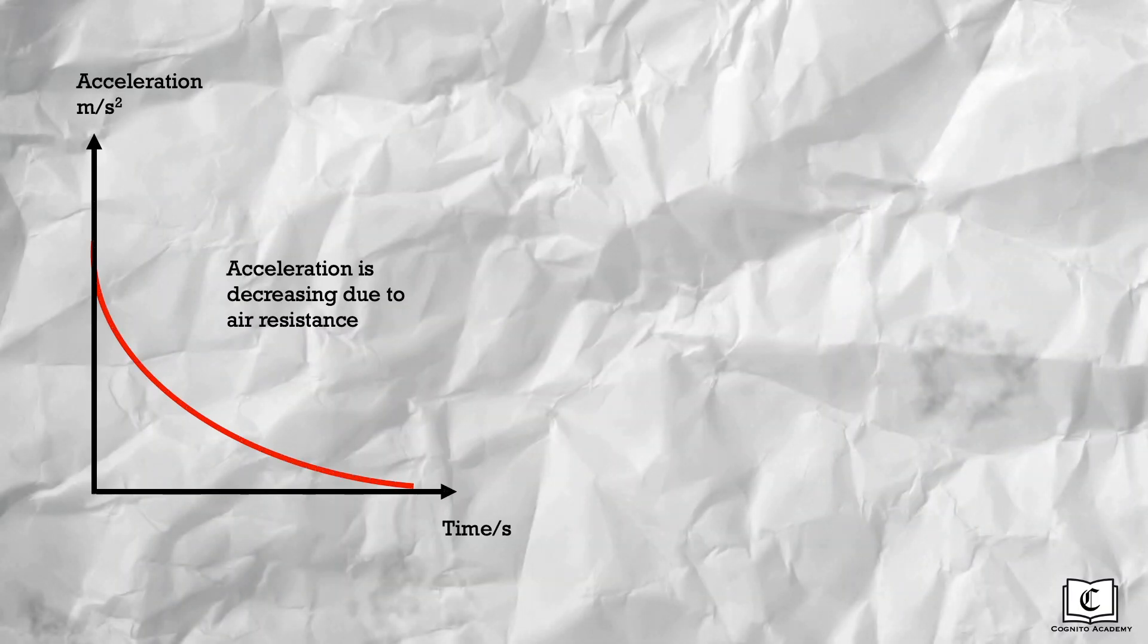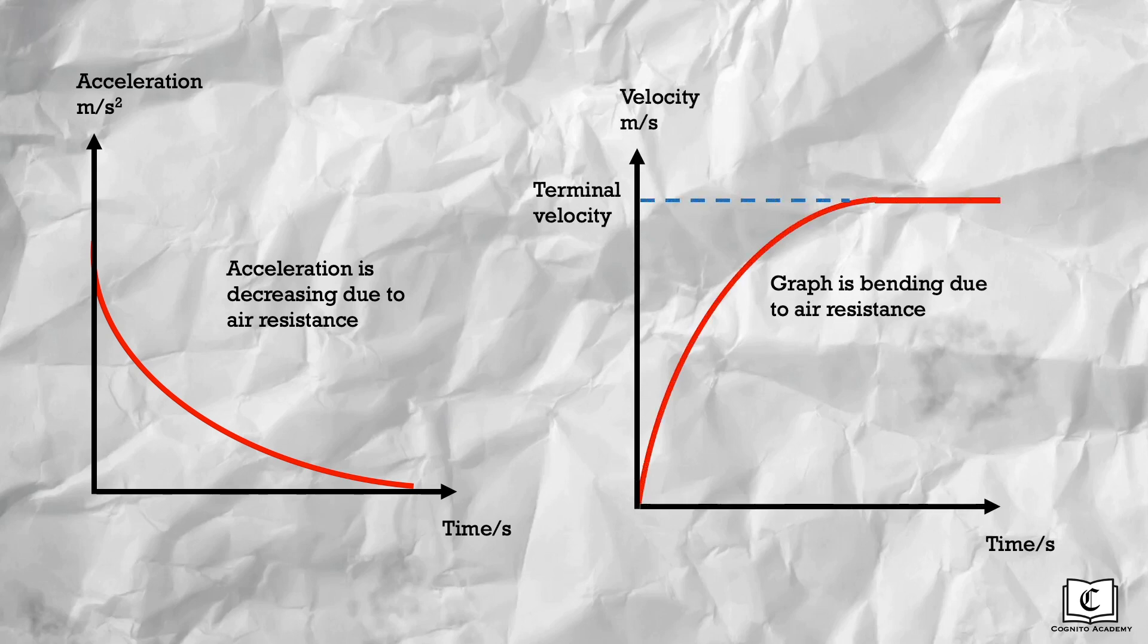With the acceleration time graph, let's next draw the velocity time graph on the right, using the idea that acceleration is the gradient of the velocity time graph. The initial acceleration is the highest. Hence, gradient for our velocity time graph is the steepest.